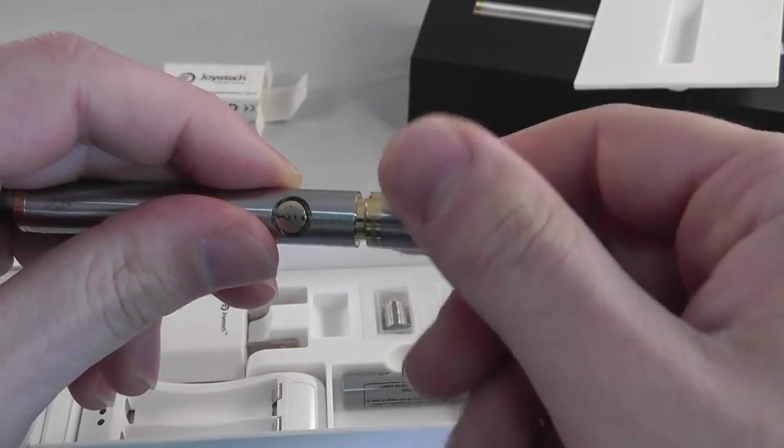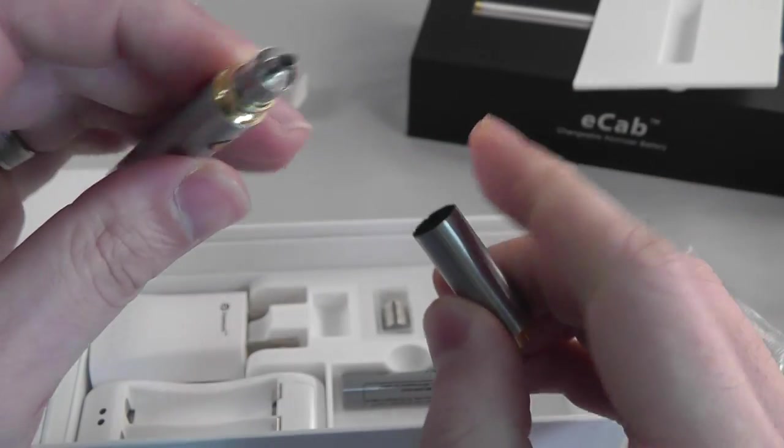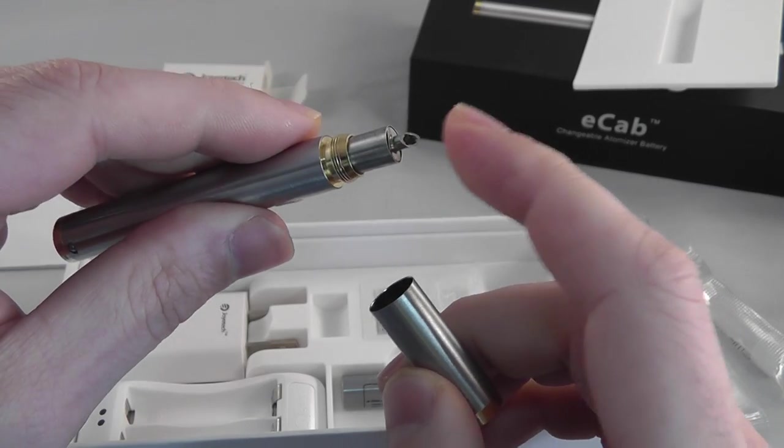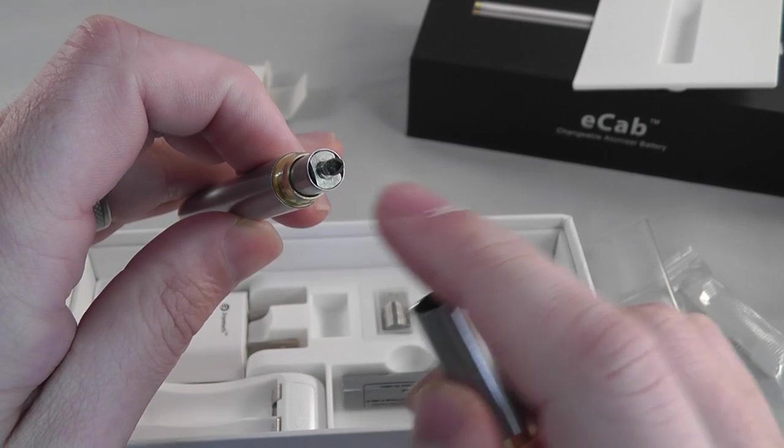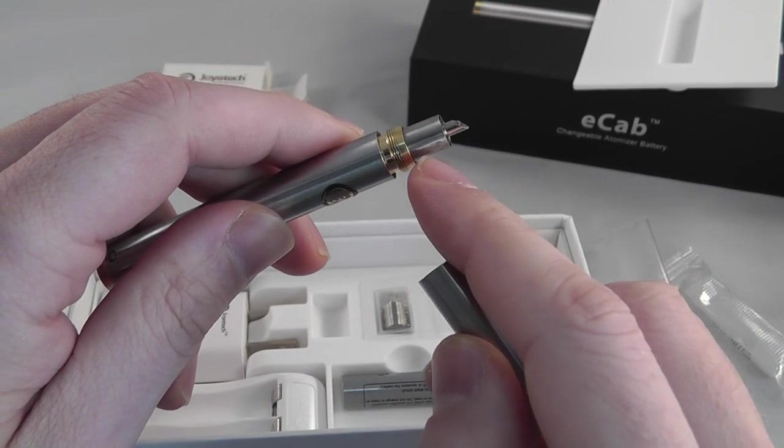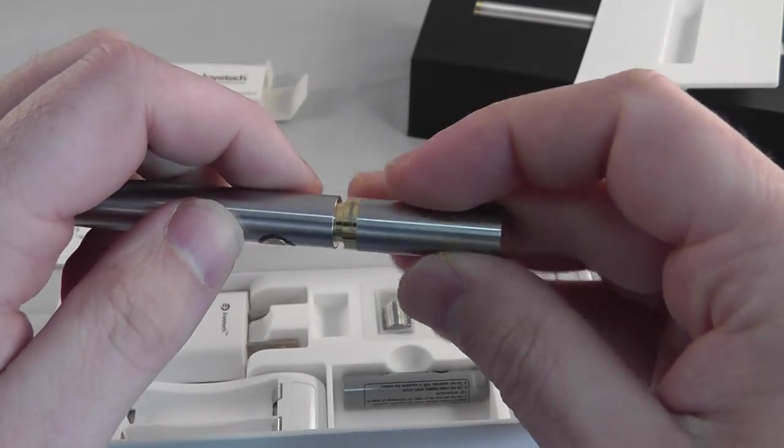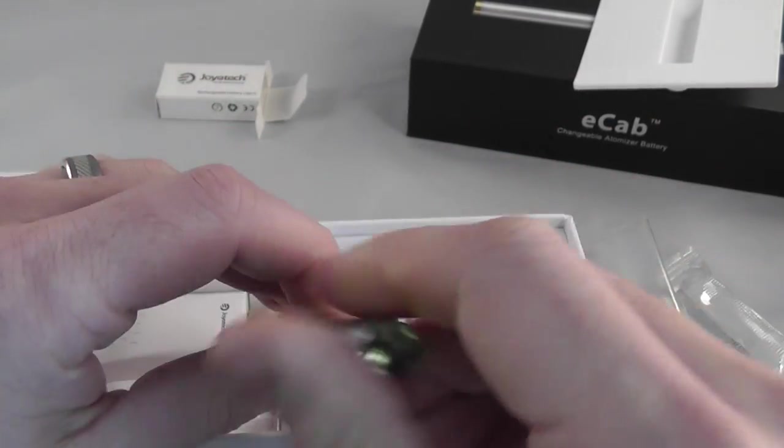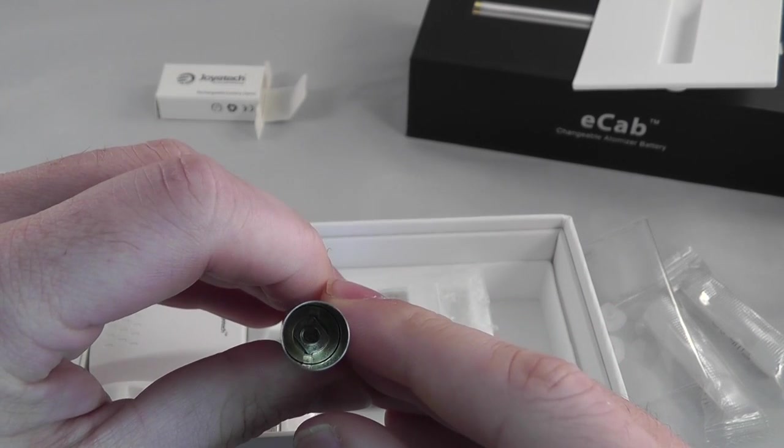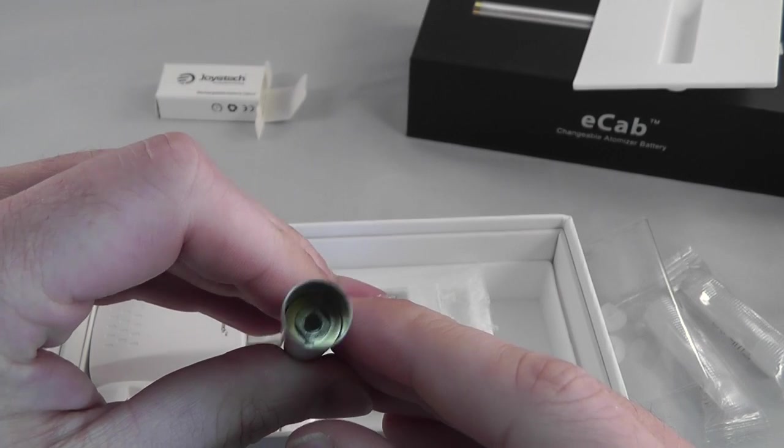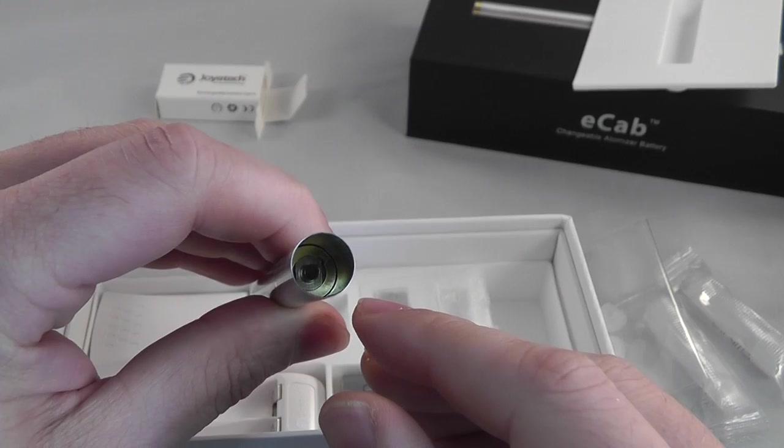Actually, before I screw that on, let me kind of show you what this looks like. This is just a straight-through design. So you have this little spike here in the center with a wick in the middle of it. And that's where the E-Liquid will actually wick down to the coil, which is in that little atomizer head. And then once you screw this on, if you take a look down inside of it, you can see where that spike, it actually just sits straight up right in the middle there. And that will actually puncture the cartridge and wick that E-Liquid down to the coils for you.